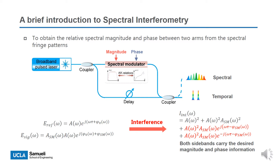Spectral interferometry is a technique which can obtain the relative magnitude and phase between the two arms of the interferometer. The principle is illustrated in the figure and equations here. A broadband pulsed laser source is split into two arms of a Mach-Zehnder interferometer. The pulse in the upper arm is the signal and the lower arm serves as a reference, which undergoes a delay that determines the interferometric fringe frequency. The signal and reference meet in a coupler generating spectral interference.